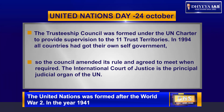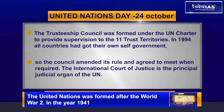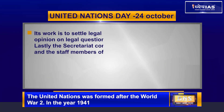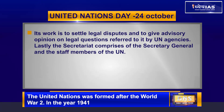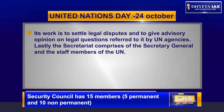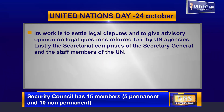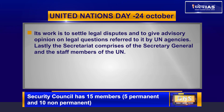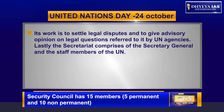The International Court of Justice is the principal judicial organ of the UN. Its work is to settle legal disputes and give advisory opinions on legal questions referred to it by UN agencies. Lastly, the Secretariat comprises the Secretary-General and the staff members of the UN.